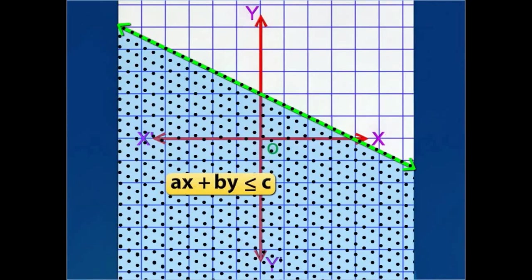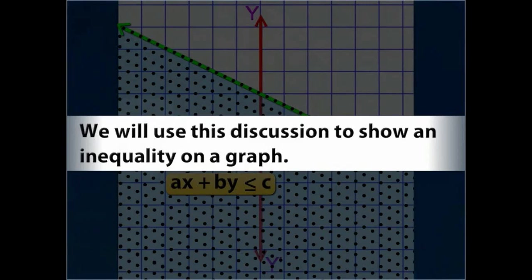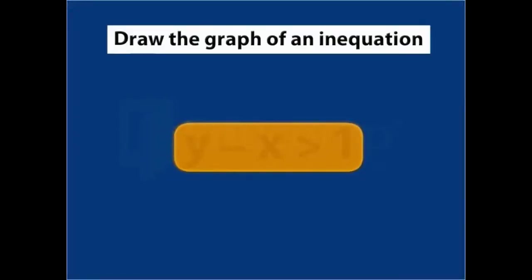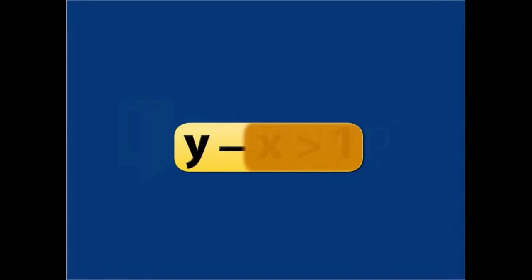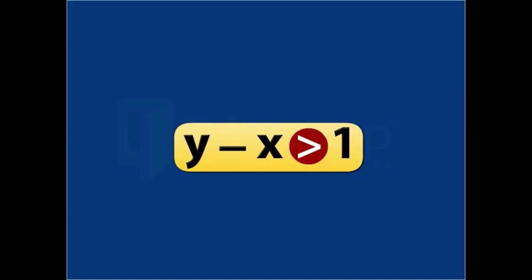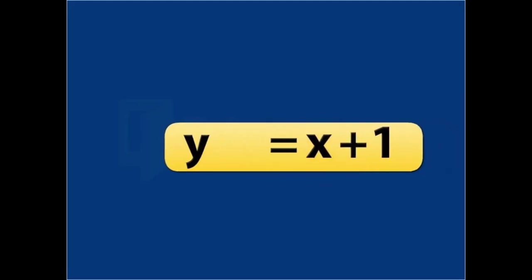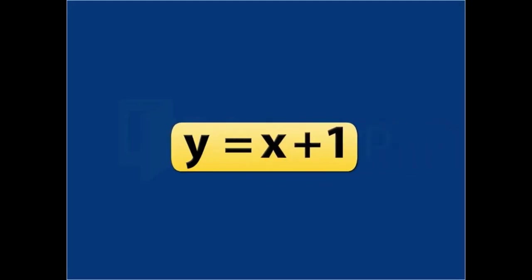We will use this discussion to show an inequality on a graph. Suppose you need to draw the graph of an inequation y minus x is greater than 1. First, replace the inequality sign by an equality sign in the given inequation. Then change the equation obtained to the form y equal to mx plus c, and locate this equation graphically.